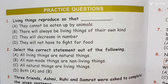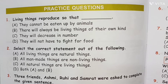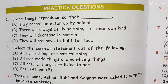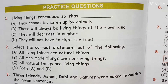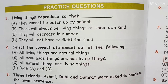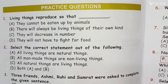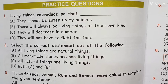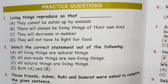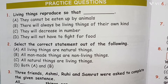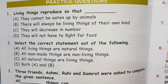Second question: Select the correct statement. Option A: all living things are natural things. Option B: all man-made things are living things. Option D: both A and B. The answer is D. All living things are natural things and all man-made things are non-living things.